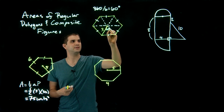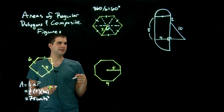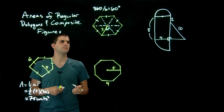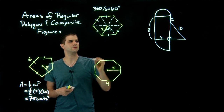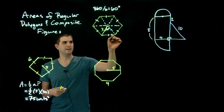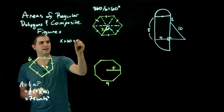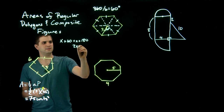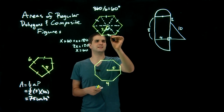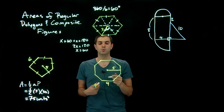So this central angle is 60 degrees, and all of them will be 60 degrees. That helps us, but we still don't know the apothem or the base. However, since the radii are congruent, we know the two base angles are congruent. So x plus 60 plus x equals 180, giving us 2x equals 120, so x equals 60. All three angles are 60 degrees — this is an equilateral triangle.